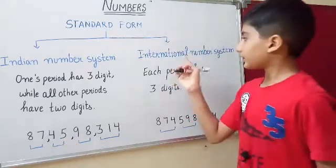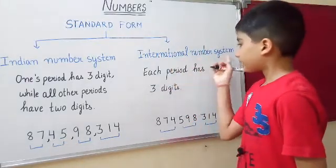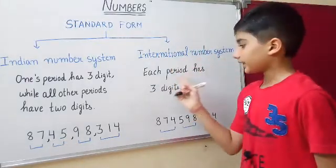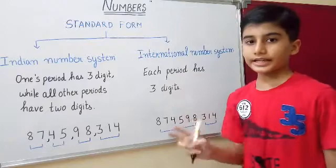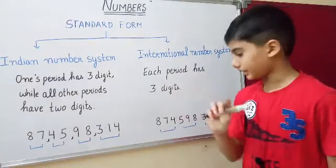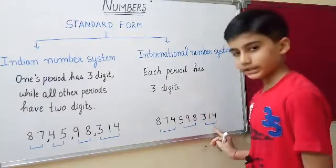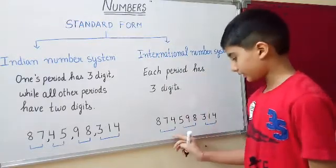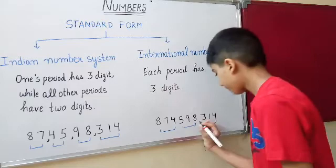In the international number system, each period has three digits — three digits, three digits, three digits.